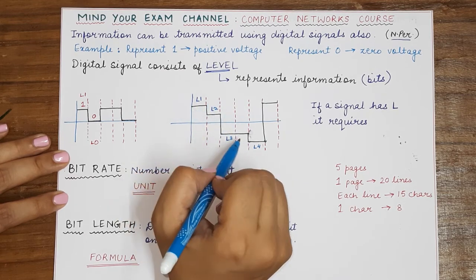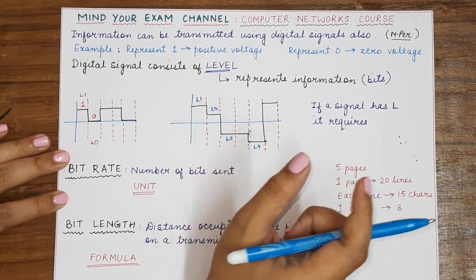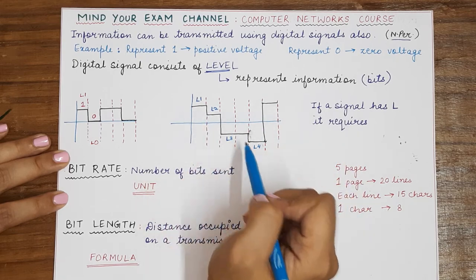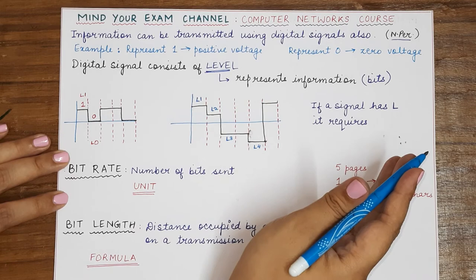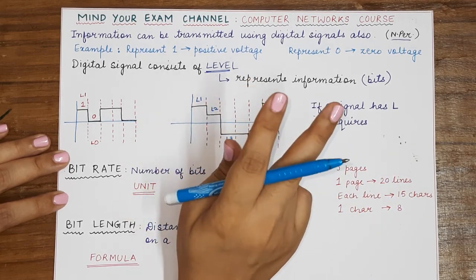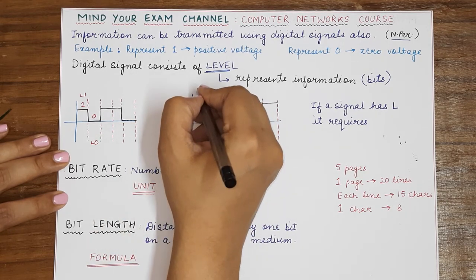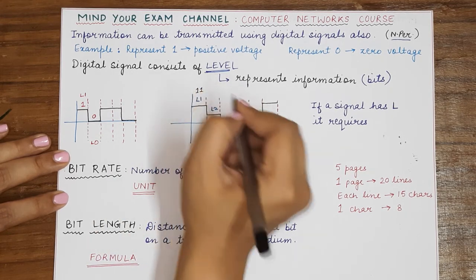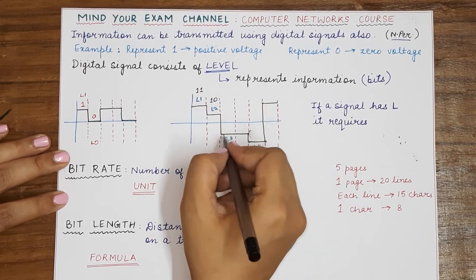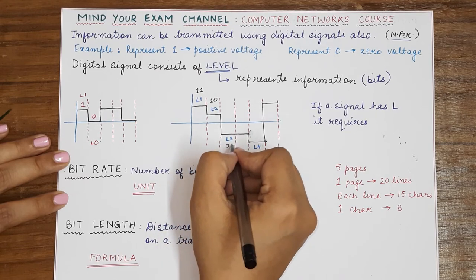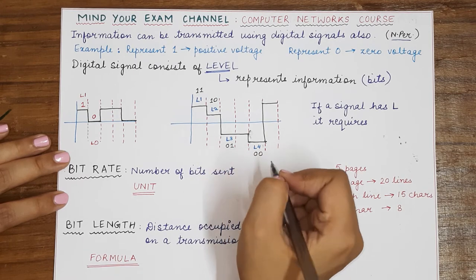Since there are four levels, four different types of information or four different combinations of bits can be represented using these four levels, and four different combinations can be formed by two bit combinations. So we can represent level zero with bits one one, level two can be represented with bits one zero, level three can be represented with bits zero one, and level four can be represented with bits zero and zero.